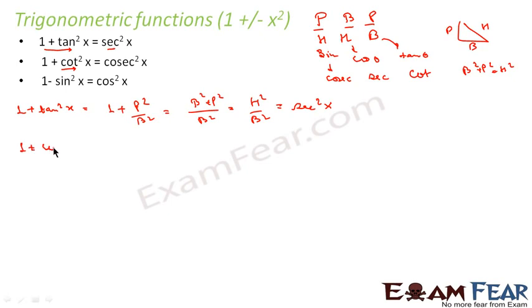Similarly, for 1 plus cot square x, this will become—cot is the reverse of tan. Tan is P by B, so cot is B by P. You square this. So what you get is P square common, this becomes P square plus B square. And P square plus B square we know is again H square, becomes H square by P square.